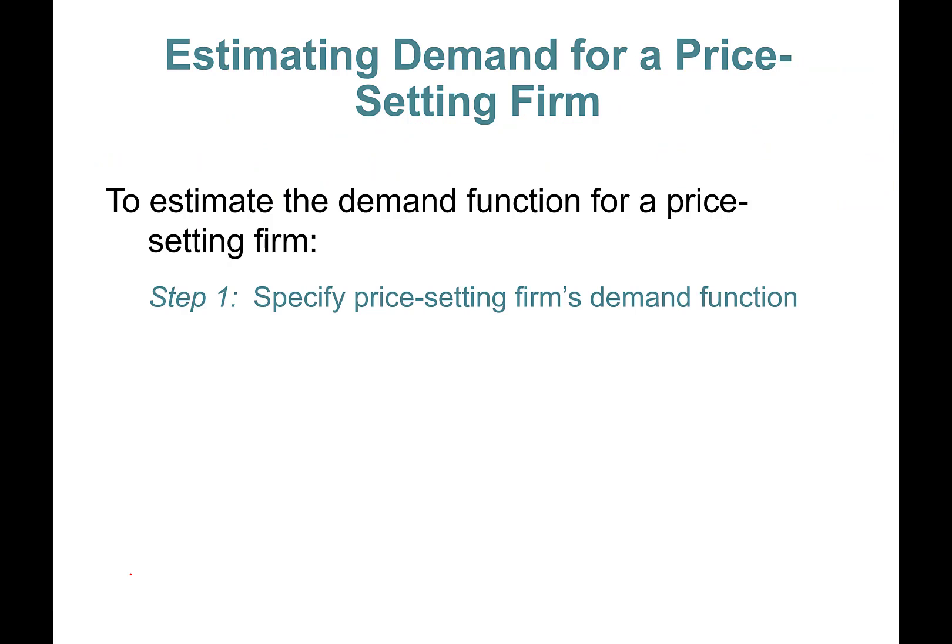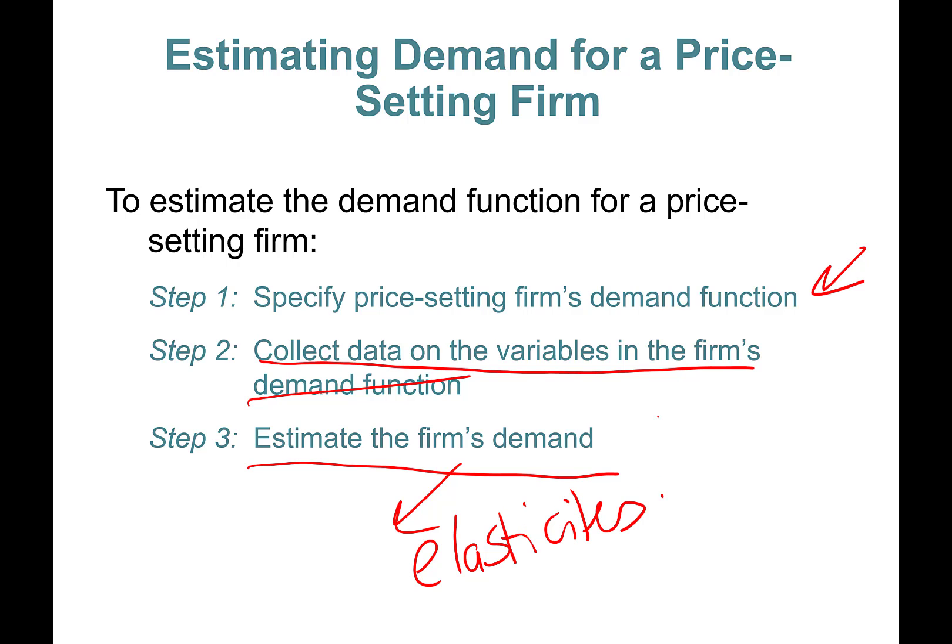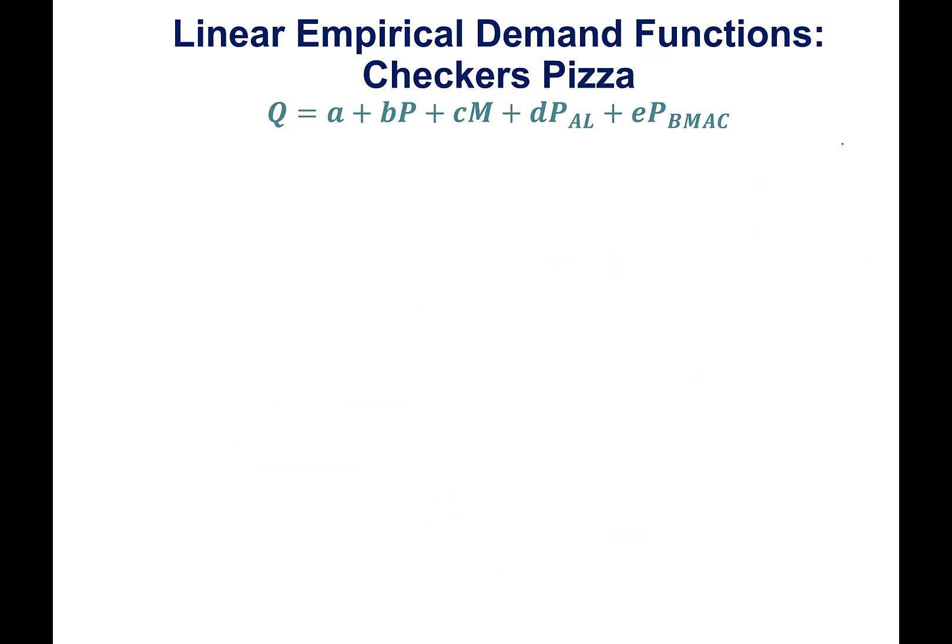So what are the steps to estimate a demand function for a price-setting firm? Number one: specify the price-setting firm's demand function. Number two: collect data on variables in the firm's demand function. Then we're going to estimate the firm's demand, and then we're going to calculate elasticities. The demand will be a function of variables X, Y, Z, and we do have specific demand function forms.